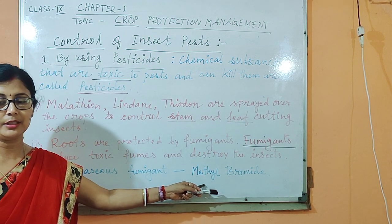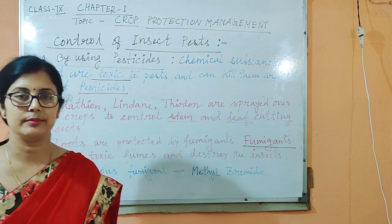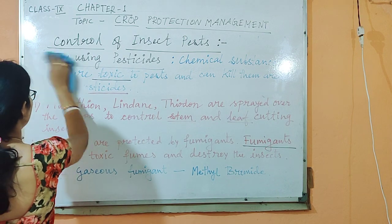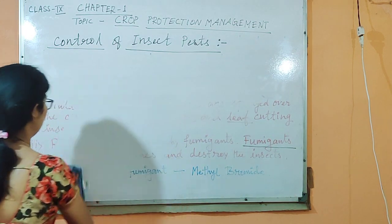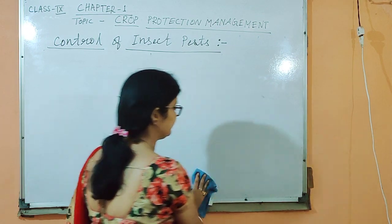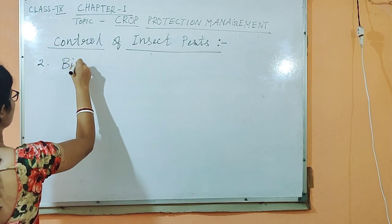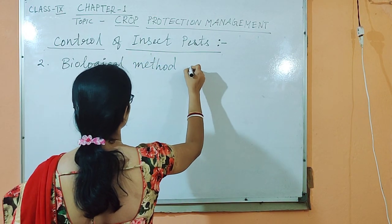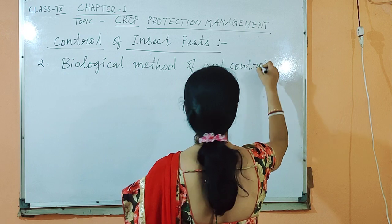Now we will learn about biological control. Number 2: it is the biological method of pest control, which is non-polluting and highly selective.